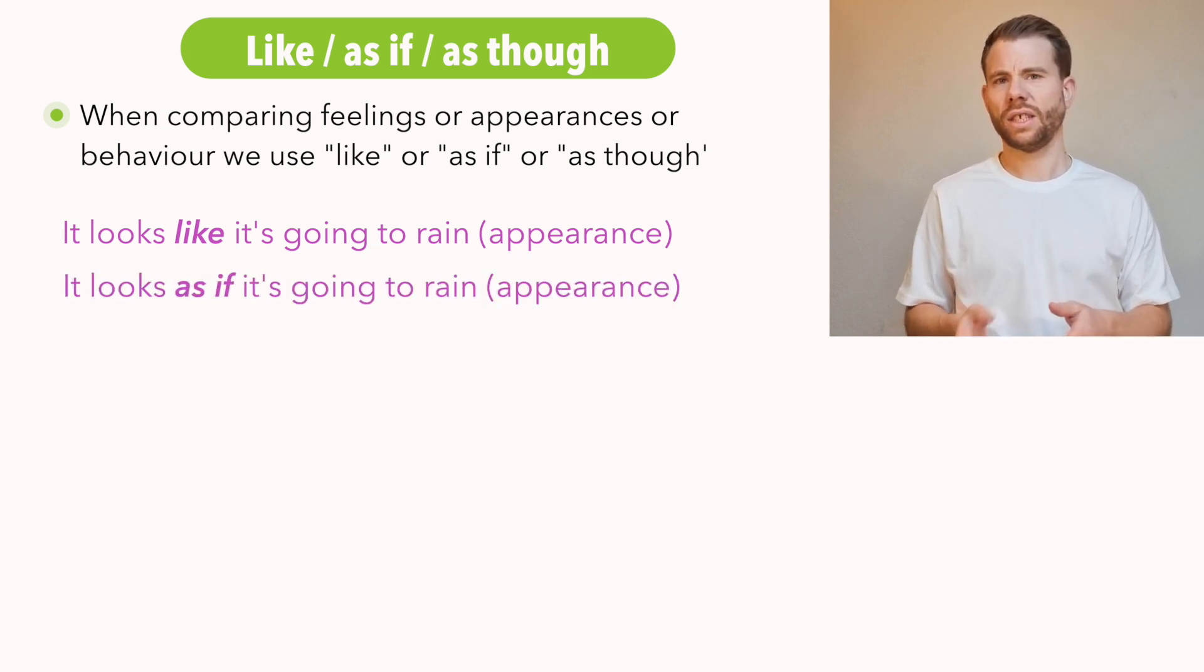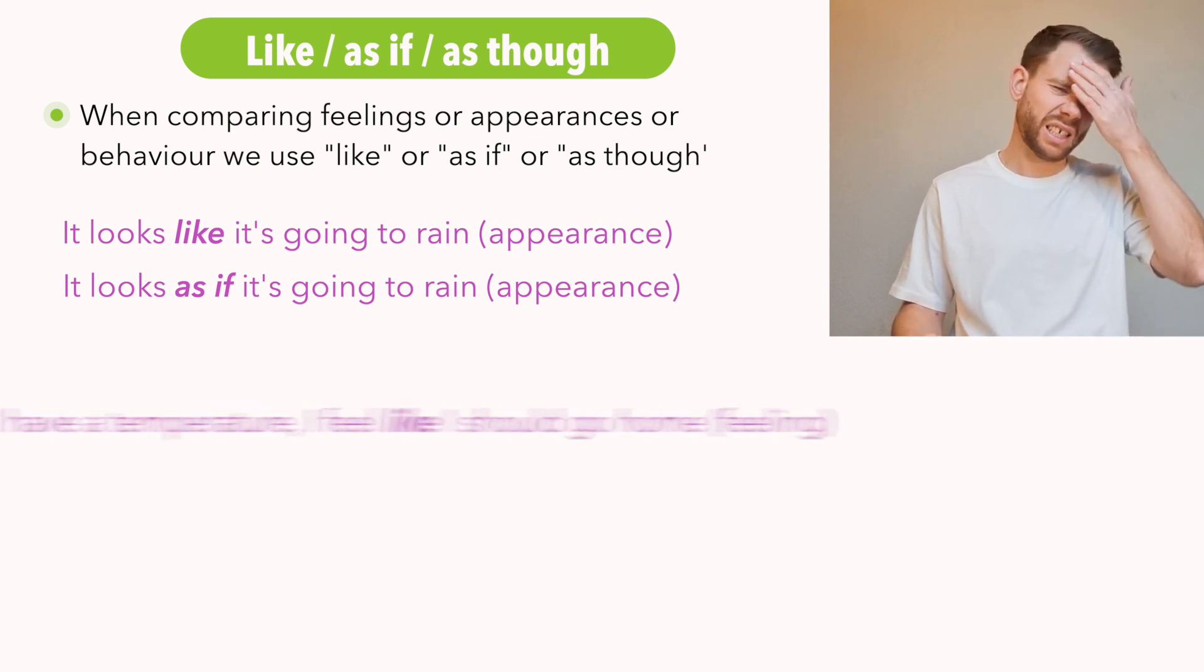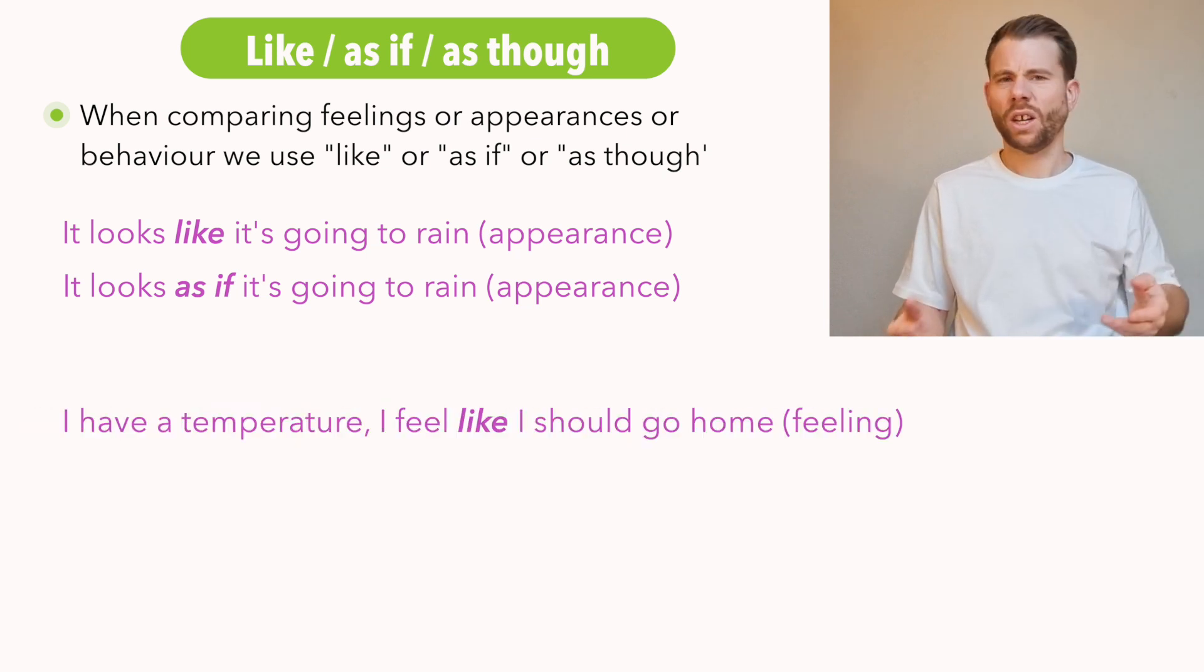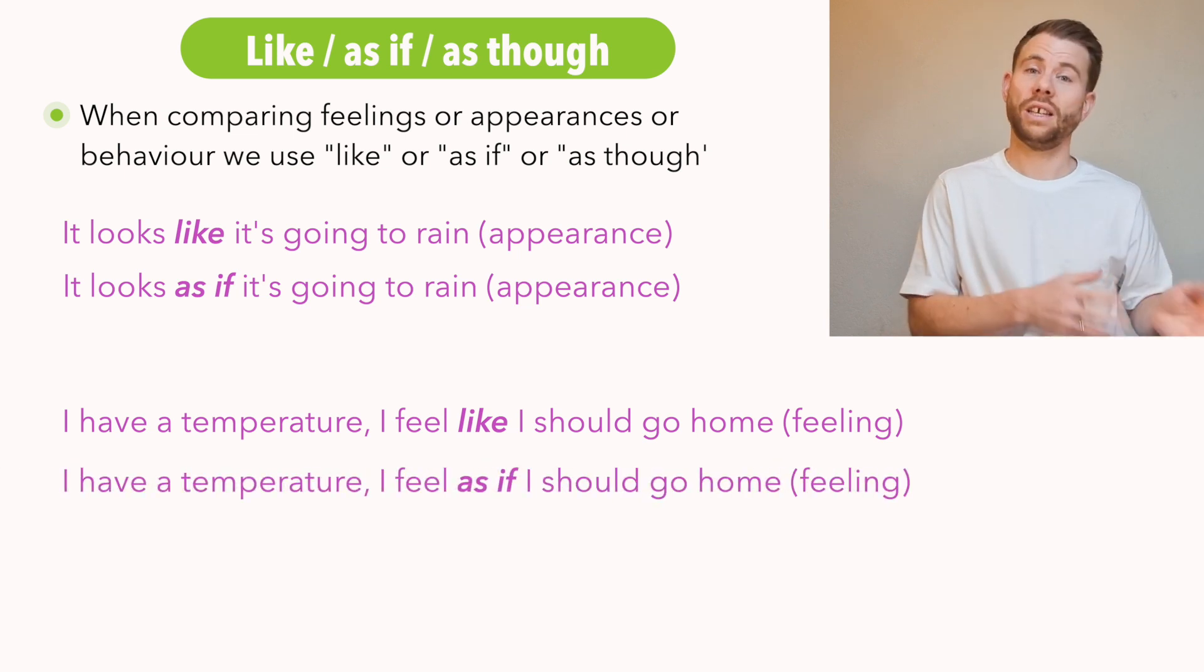Just to say it looks as it's going to rain, it's not correct. People don't say that because you're comparing the appearance, the look of something. Another example with this could be, I have a temperature. I feel like I should go home. Here if you use as, it's not correct because you're talking about your feelings. But you could replace like with as if or also as though.